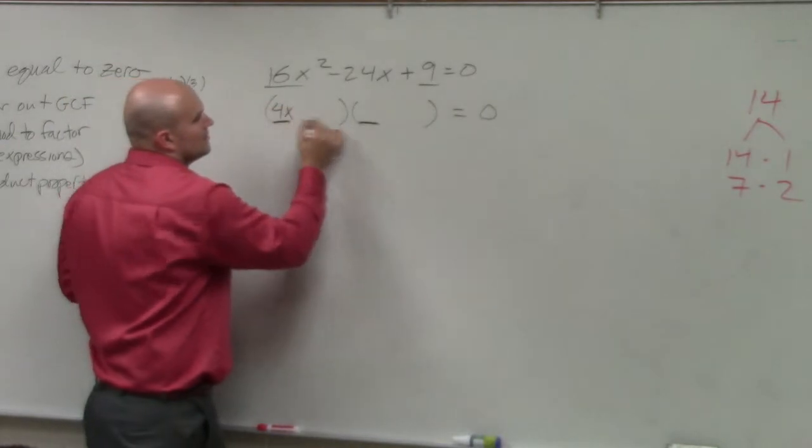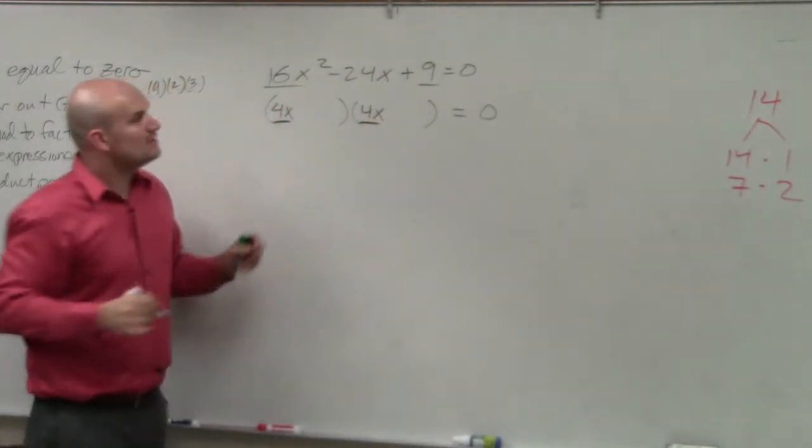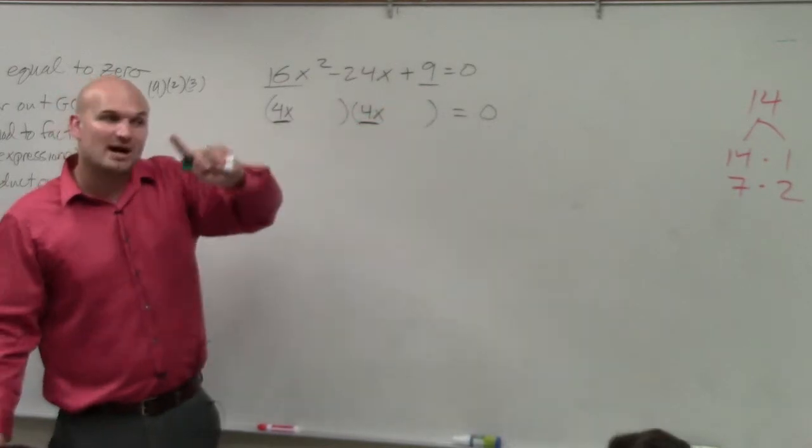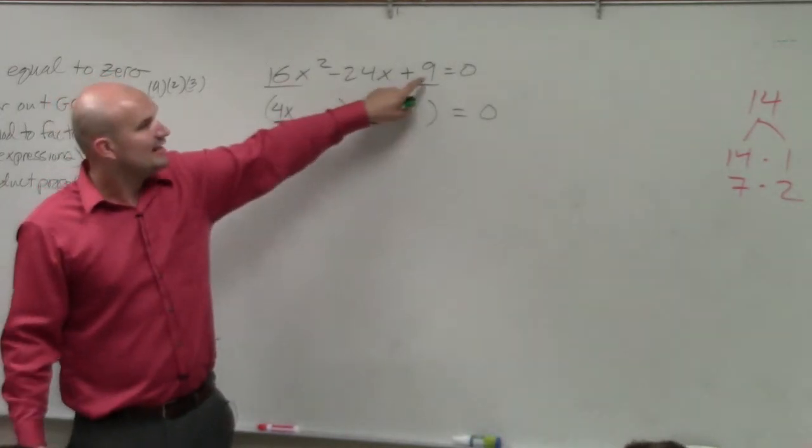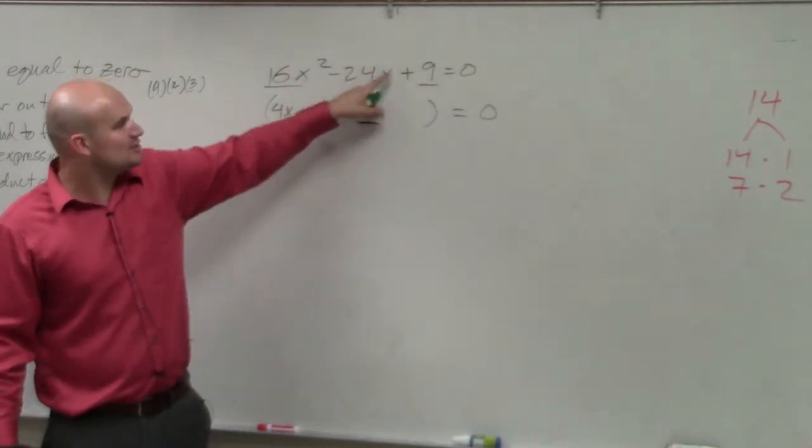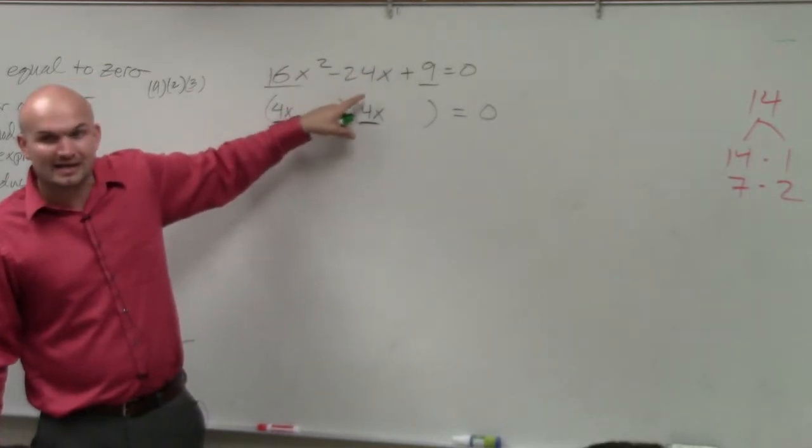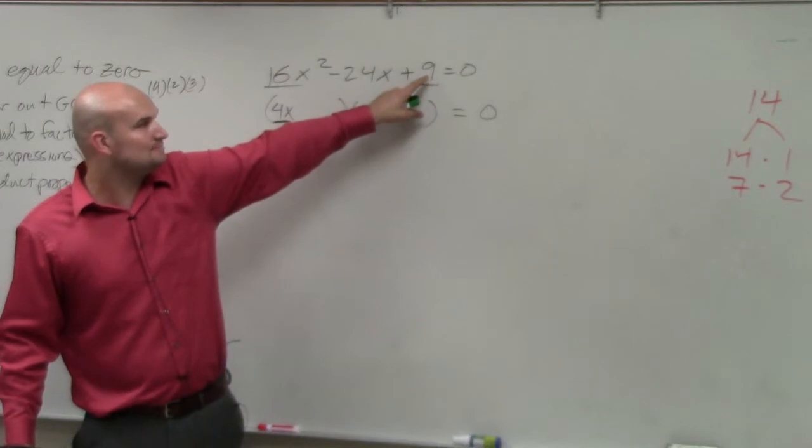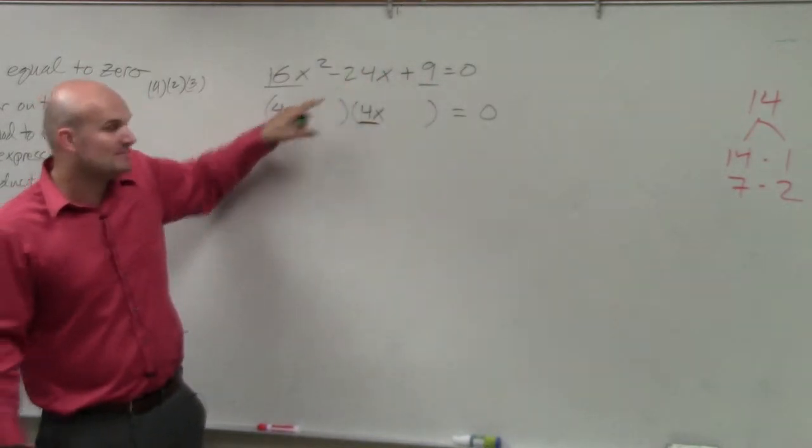4x. And then what about two numbers that multiply to give me 9? 3 and 3. But one thing we've got to be careful with is, remember, when you multiply your middle terms, they're going to be adding to give you a negative. So if these two are positive, and if my middle term is negative, then my two values are going to have to be negative 3 and negative 3.